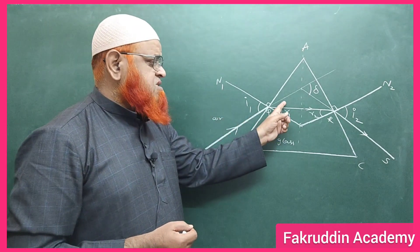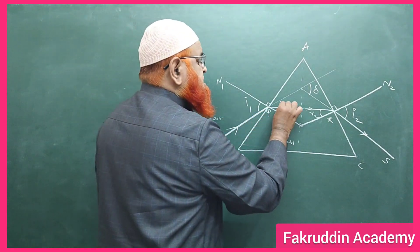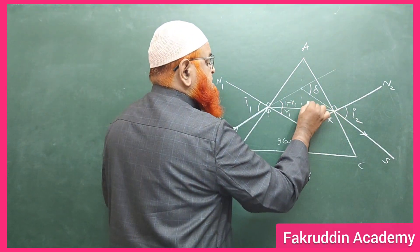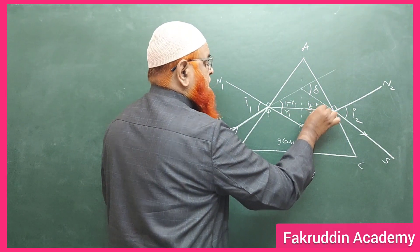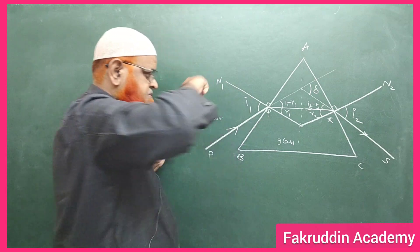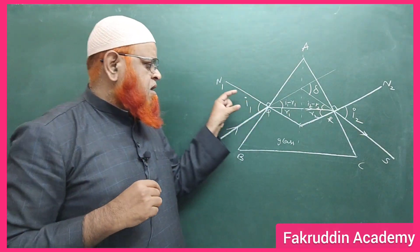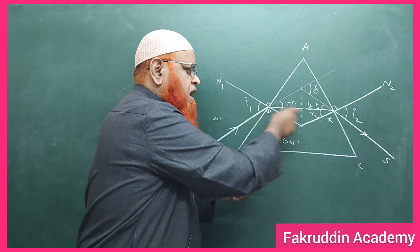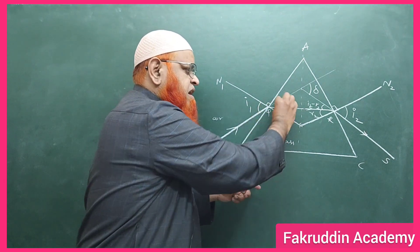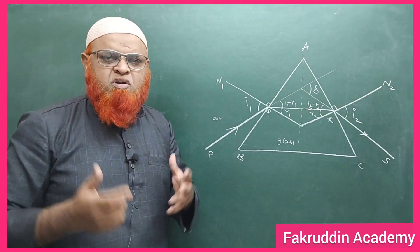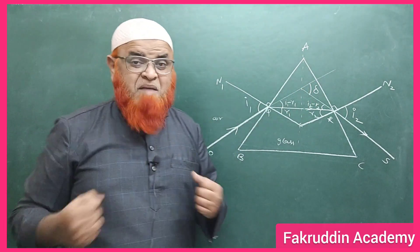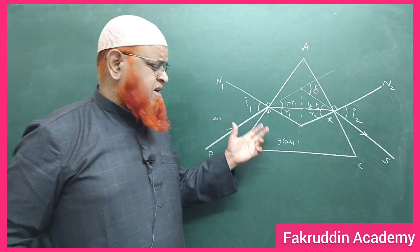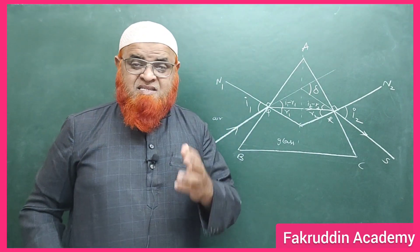The remaining angles inside the prism are i1 minus r1 and i2 minus r2. These are vertically opposite angles. If the angle at one surface is r1, the remaining portion becomes i1 minus r1. This follows from basic geometry. Now we shall discuss the three-step shortcut formula for the prism.